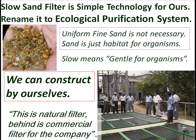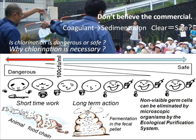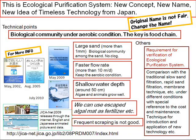We can easily get safe drinking water by ourselves. Slow sand filter is simple technology for us — the new name for it is ecological purification system. Don't believe commercial claims. Non-visible germ cells can be eliminated by microscopic organisms through the ecological purification system. This ecological purification system is a new concept, a new name, a new idea of timeless technology from Japan. The original name is not fair — change the name.